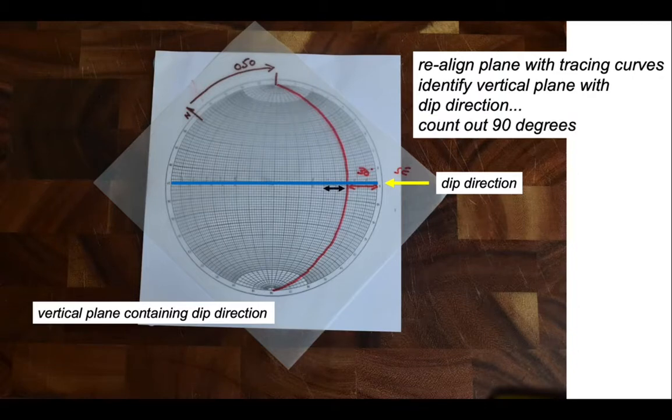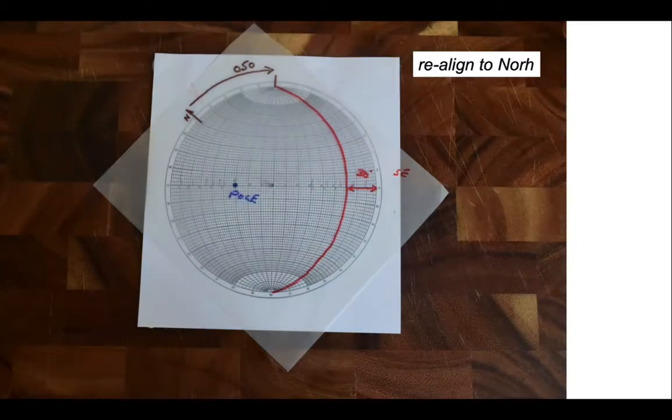10, 20, 30, 40, 50, 60, 70, 80, 90. And that is the pole, 90 degrees out from the original plane that we plotted. Our bedding plane, if you will. So that is the pole to that great circle.